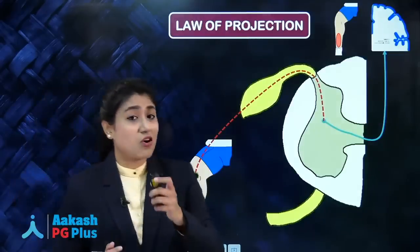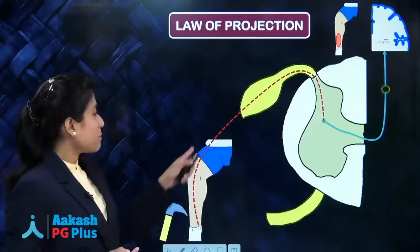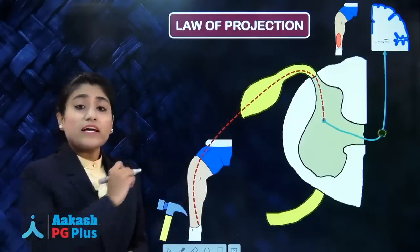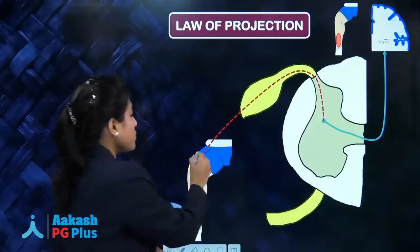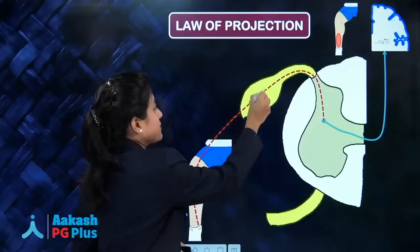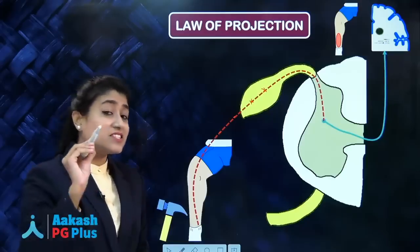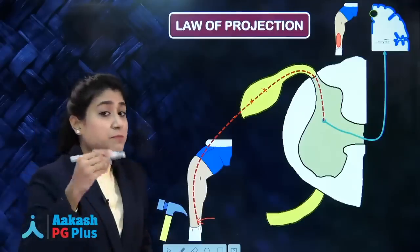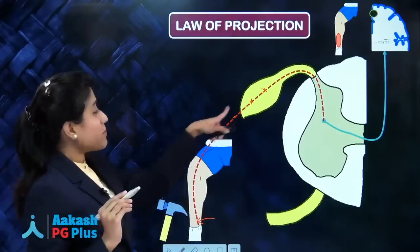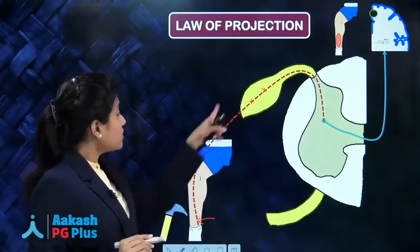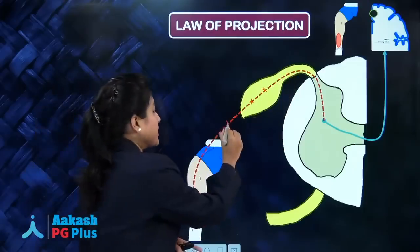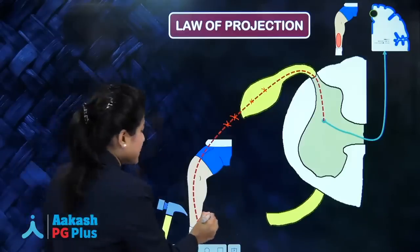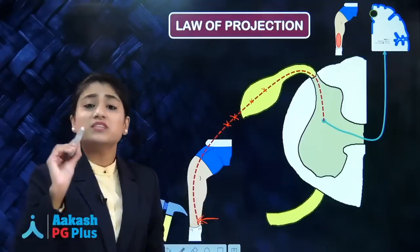The next law is the law of projection. Here you can see the pain pathway arising from the leg and going to the brain. If along this pathway I stimulate this nerve at any point, remember the sensation felt is referred to its site of receptor. Here you can see the pain pathway from the leg — if I stimulate at any point along this pathway, sensation felt is referred to its site of receptor, which is present in the leg.